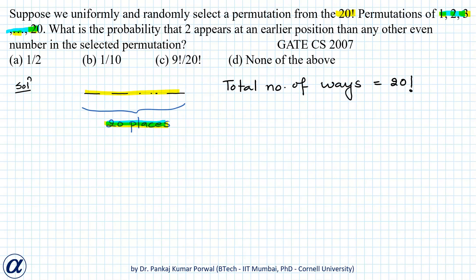And here note that out of these 20 numbers there will be 10 odd numbers that is 1, 3, 5, 7, dot dot dot up to 19 and 10 even numbers that is 2, 4, 6, dot dot dot up to 20.